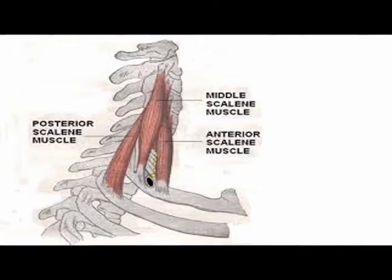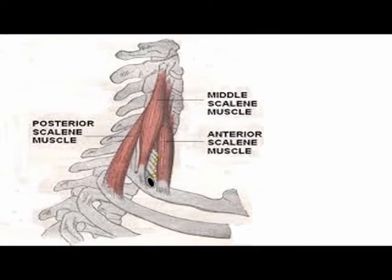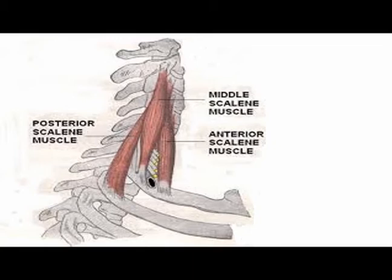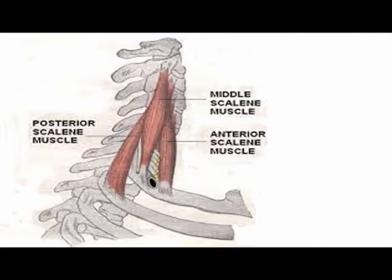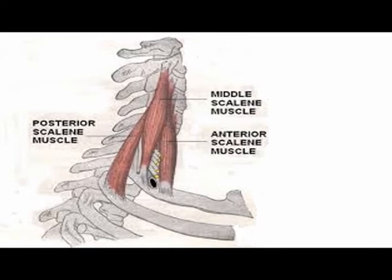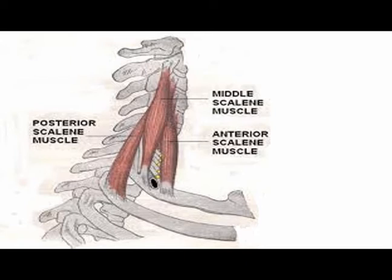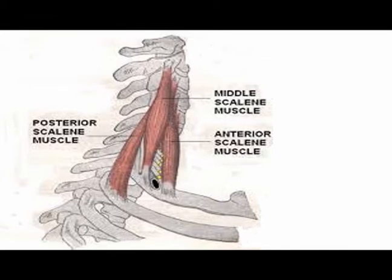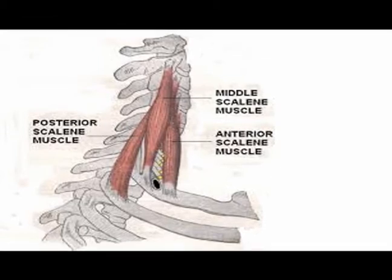The middle scalenes, also known as the scalenus medius, are the longest and largest of the three scalene muscles. They originate on the posterior tubercle of the transverse process of cervical vertebrae C2 through C7. They insert on the first rib in between the scalene tubercle and the subclavian groove. They are innervated by the anterior rami of C3 through C8.